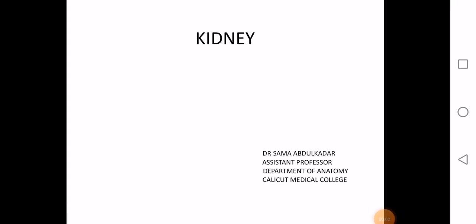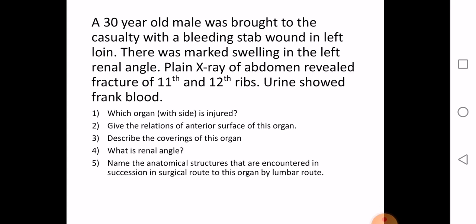This class will deal with the gross anatomy of the kidney. We will begin with a question. A 30-year-old male was brought to the casualty with a bleeding stab wound in the left loin. There was marked swelling in the left renal angle. Plain x-ray of the abdomen revealed fracture of the 11th and 12th ribs. Urine showed frank blood. The questions posed to you are: which organ, specifying the side, is injured? Give the relations of the anterior surface of this organ. Describe the coverings of this organ. What is the renal angle? Name the anatomical structures encountered in succession in the surgical route to this organ via the lumbar route.